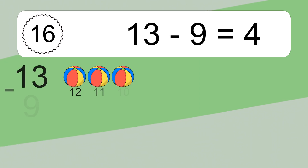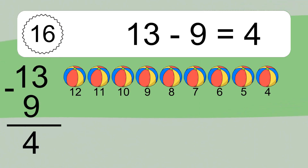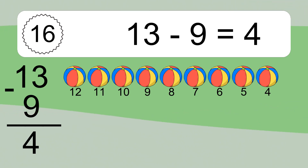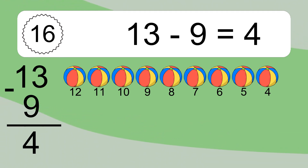13 minus 9 equals what? 13 minus 9 equals 4. Let's count it: 12, 11, 10, 9, 8, 7, 6, 5, 4.